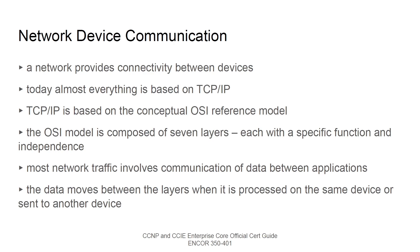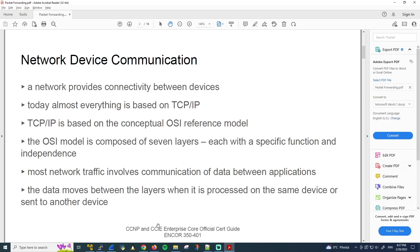If you've studied networking before or worked in the field, you've most likely heard of the OSI reference model — it is so famous and legendary. The OSI model is composed of seven layers, each with a specific function and independence. What I mean by independence is that each layer works separately without affecting the other layers. It's perhaps easier to understand if we actually look at the OSI reference model, so let me go to this Wikipedia page.